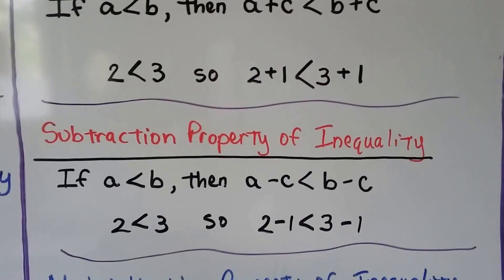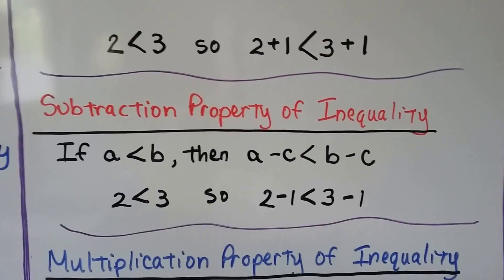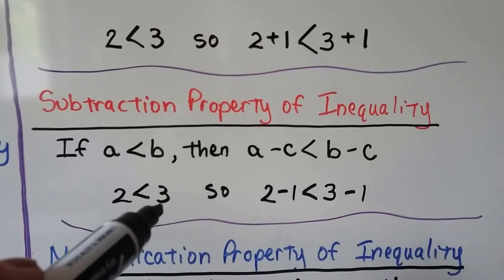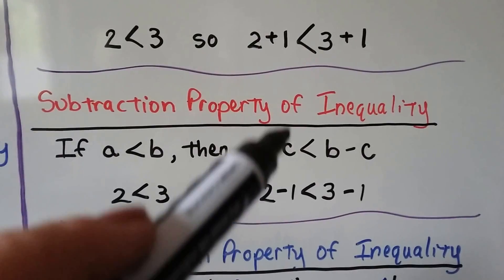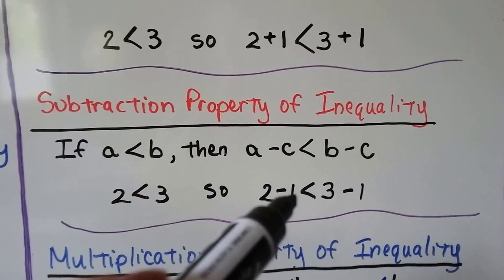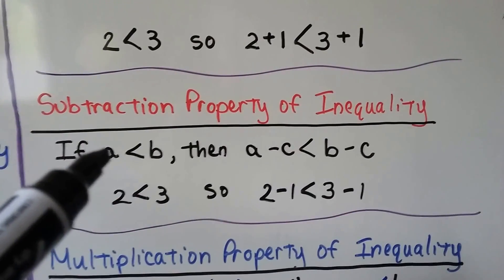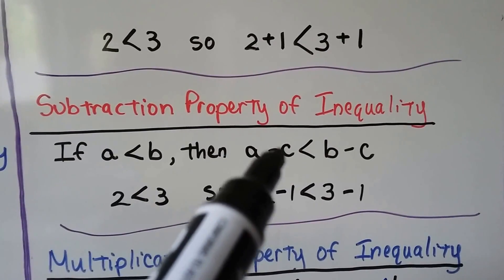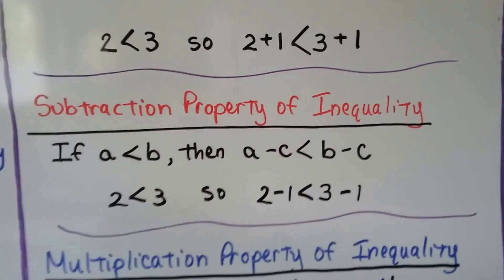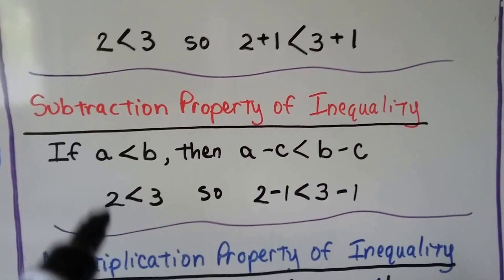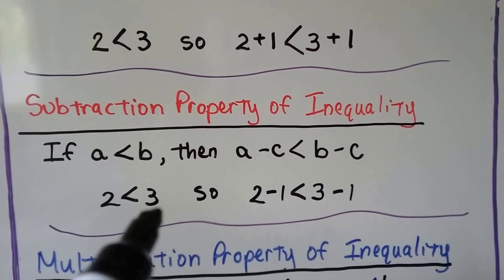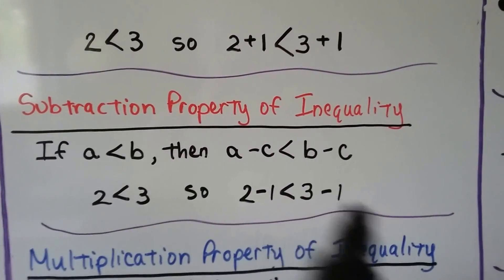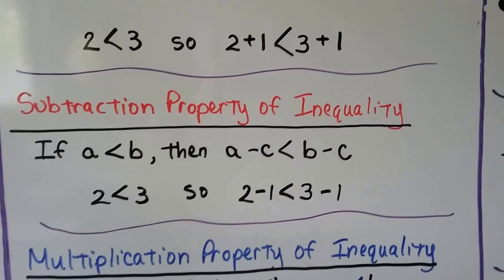The subtraction property of inequality: with a = 2, b = 3, and c = 1, if a is less than b, then a − c is less than b − c. So if 2 is less than 3, then 2 − 1 is less than 3 − 1.